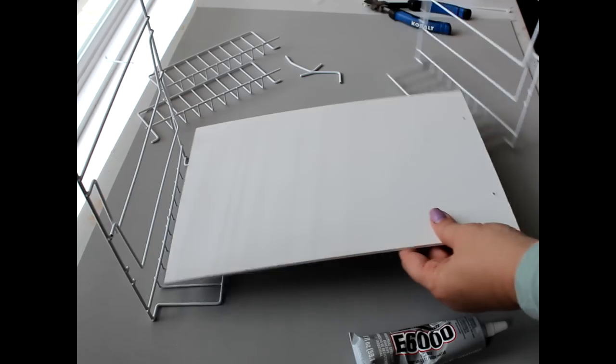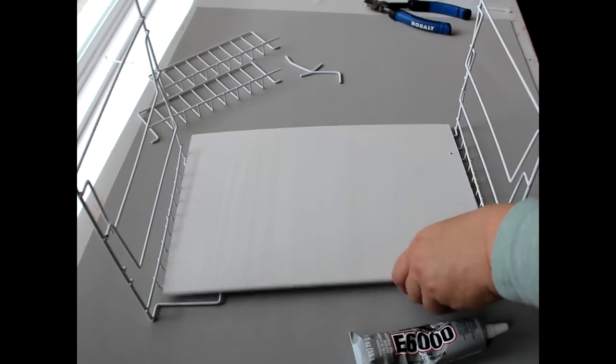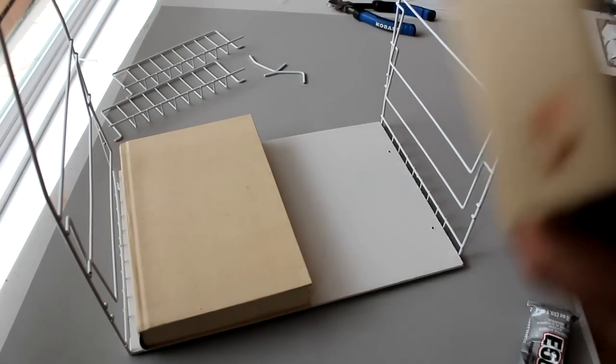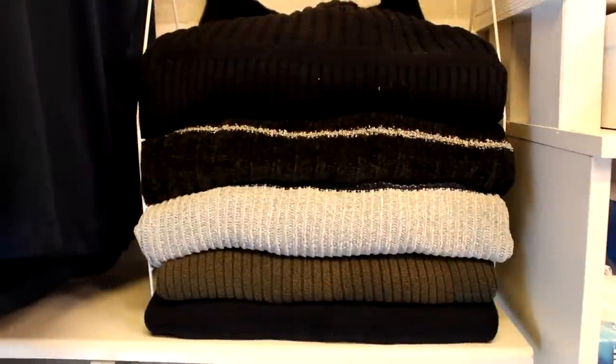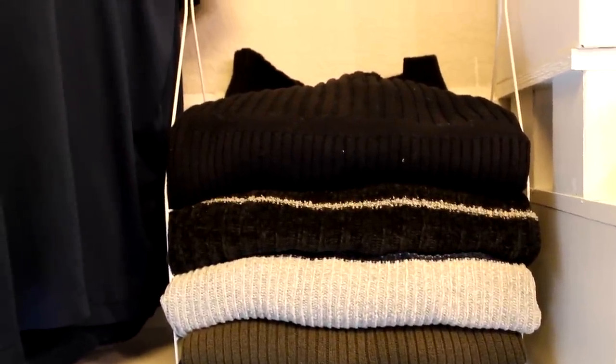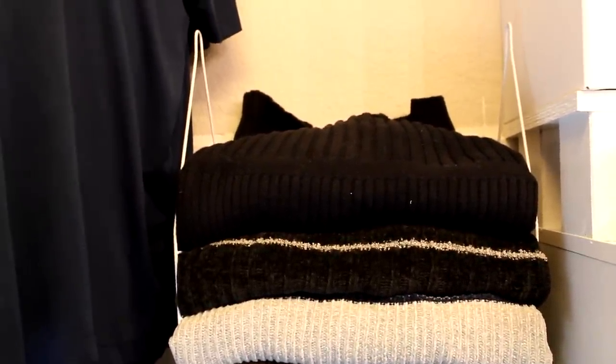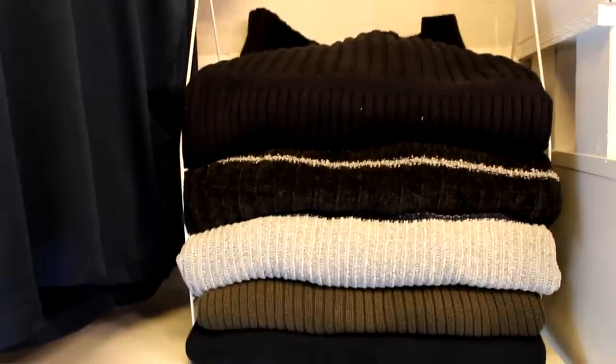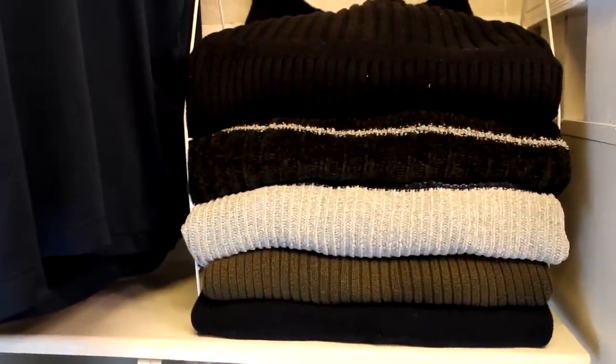To attach the sign, I used some E6000 glue on the bottom shelf, then placed the sign on top and weighted it down until the glue was set. Then all you need to do is place it on a shelf and fill with clothes. Here again are the five extra large men's sweaters and there's still room to spare. If you want a more narrow or wider separator, you can adjust the size of the base accordingly.